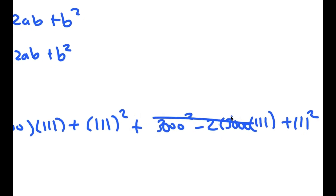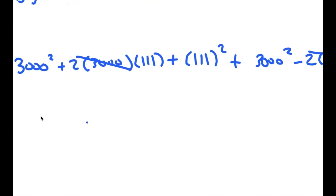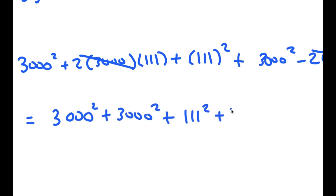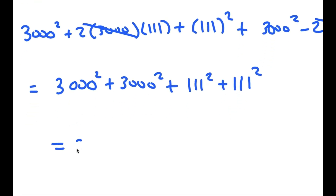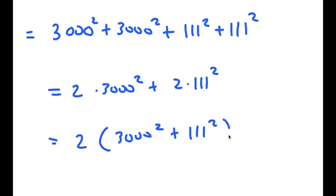The negative 2 times 3,000 times 111 and positive 2 times 3,000 times 111 cancel out. So I'm left with 3,000 squared plus 3,000 squared plus 111 squared plus 111 squared, which is the same thing as 2 times 3,000 squared plus 2 times 111 squared. If I factor out 2, I get 2 times 3,000 squared plus 111 squared.